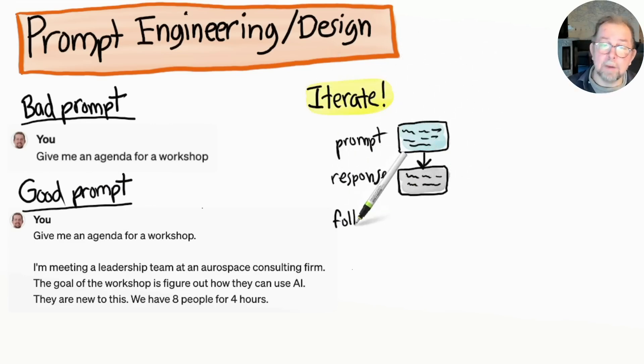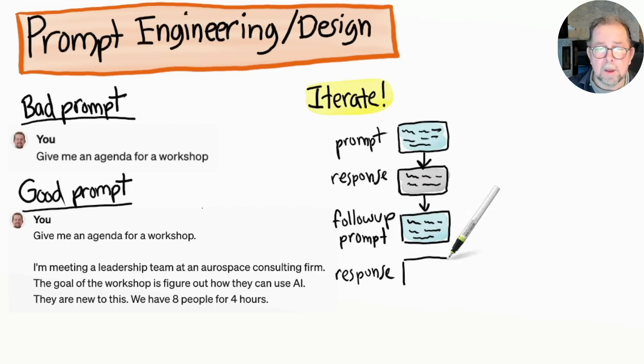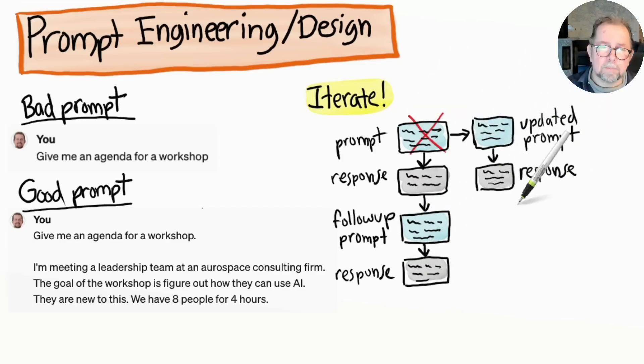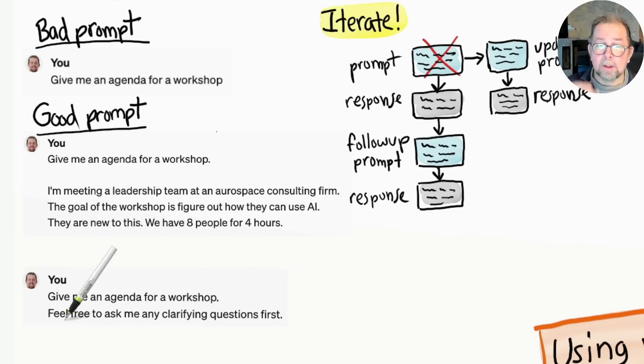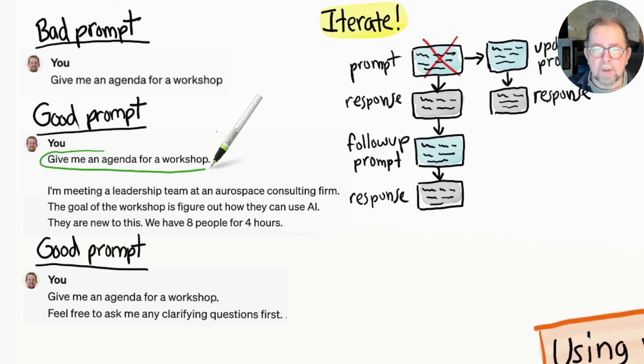In this third approach, I ask it to interview me. So instead of me providing a bunch of context up front, I'm basically saying "What do you need to know in order to help me?" and then it will propose a workshop agenda after. I often combine these two: I provide a bit of context, and then I tell it to ask me if it needs any more information. These are just some examples of prompt engineering techniques.